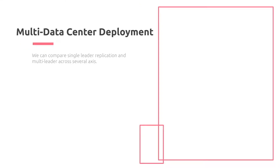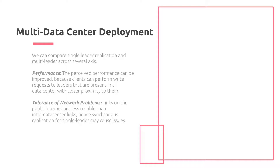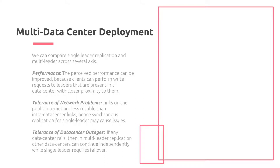We can compare single-leader replication and multi-leader across several axes. First is performance: perceived performance can be improved because clients can perform write requests to leaders in a data center with closer proximity to them. Second, tolerance of network problems: links on the public internet are less reliable than intra-data center links, so synchronous replication for a single leader may cause issues. Third, tolerance of data center outages: if any data center fails, multi-leader replication allows other data centers to continue independently, while single leader requires failover and the entire operation can be disrupted.